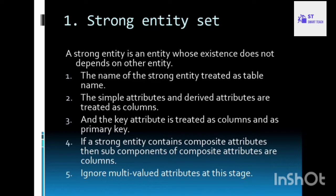The key attribute is treated as a column and also as the primary key for the table. If the strong entity contains composite attributes — attributes which are divided into sub-components — those sub-components are treated as columns. Multi-valued attributes should be ignored at this stage.